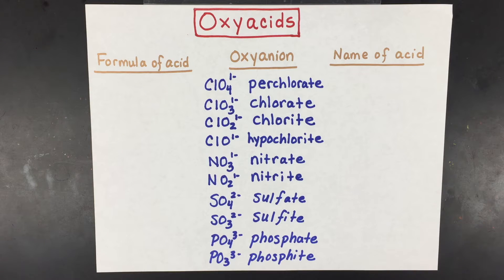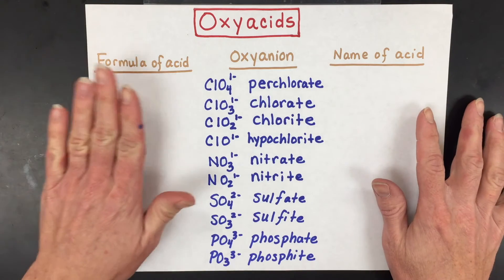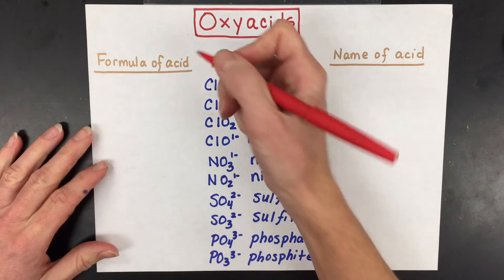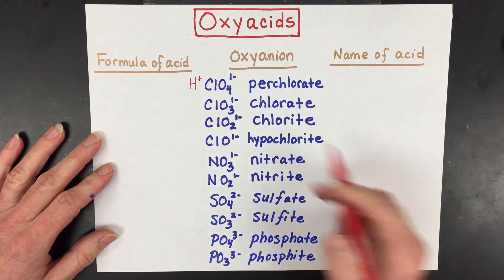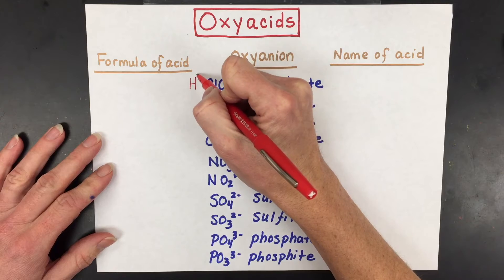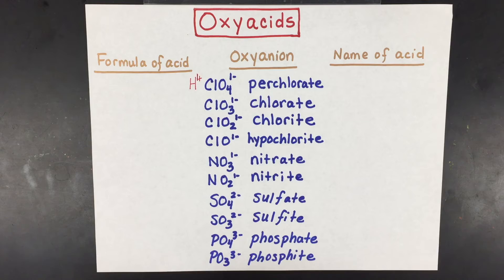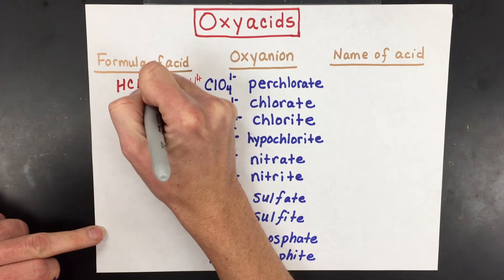Here are some examples using common oxyanions: perchlorate, chlorate, and chlorite. We're going to put the formula on one side and the name of the acid on the other. For perchlorate, you add a hydrogen ion because that is what makes it an acid. Since the one-plus of the hydrogen ion equals the one-minus of the perchlorate ion, the formula is HClO4.